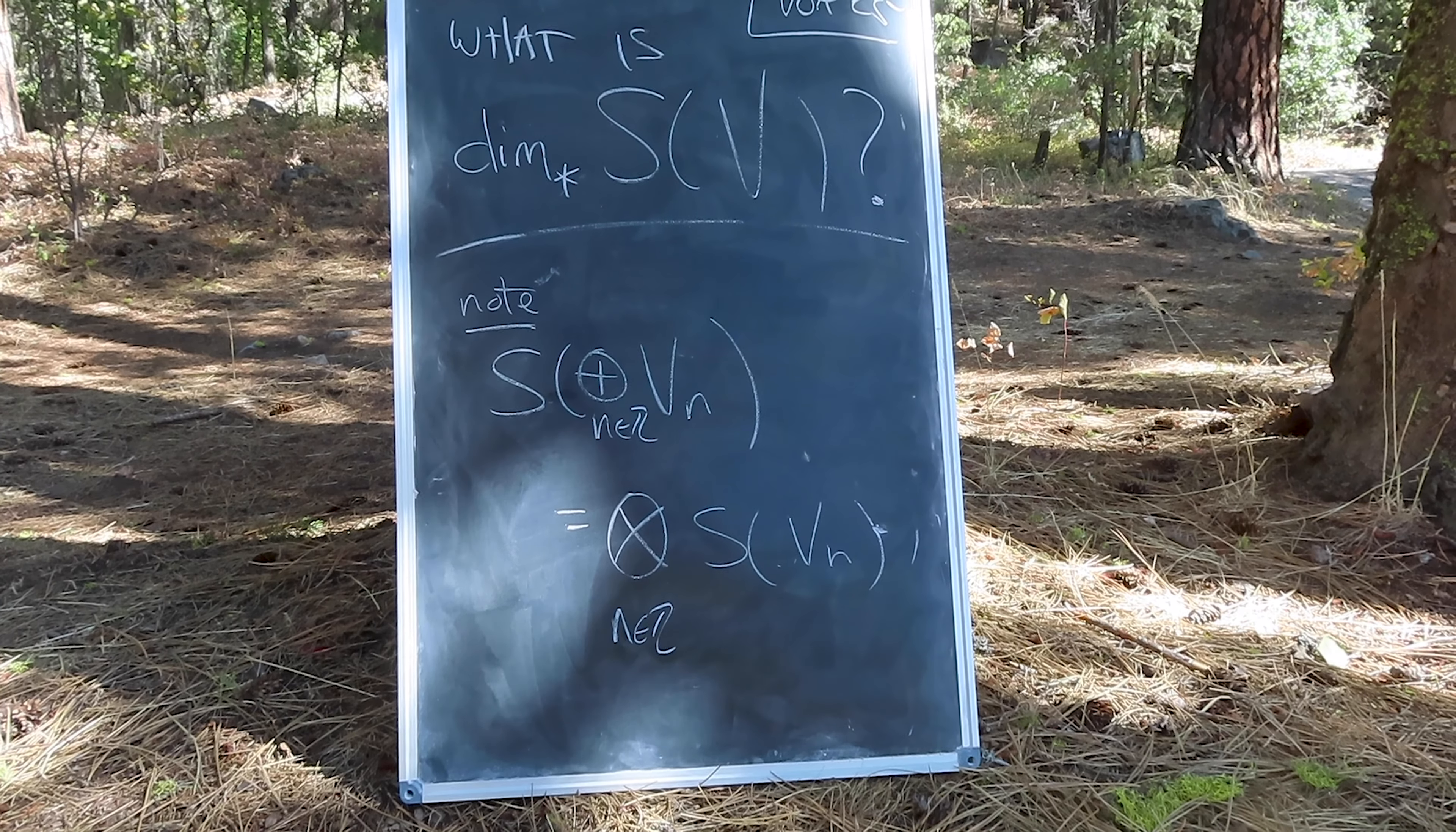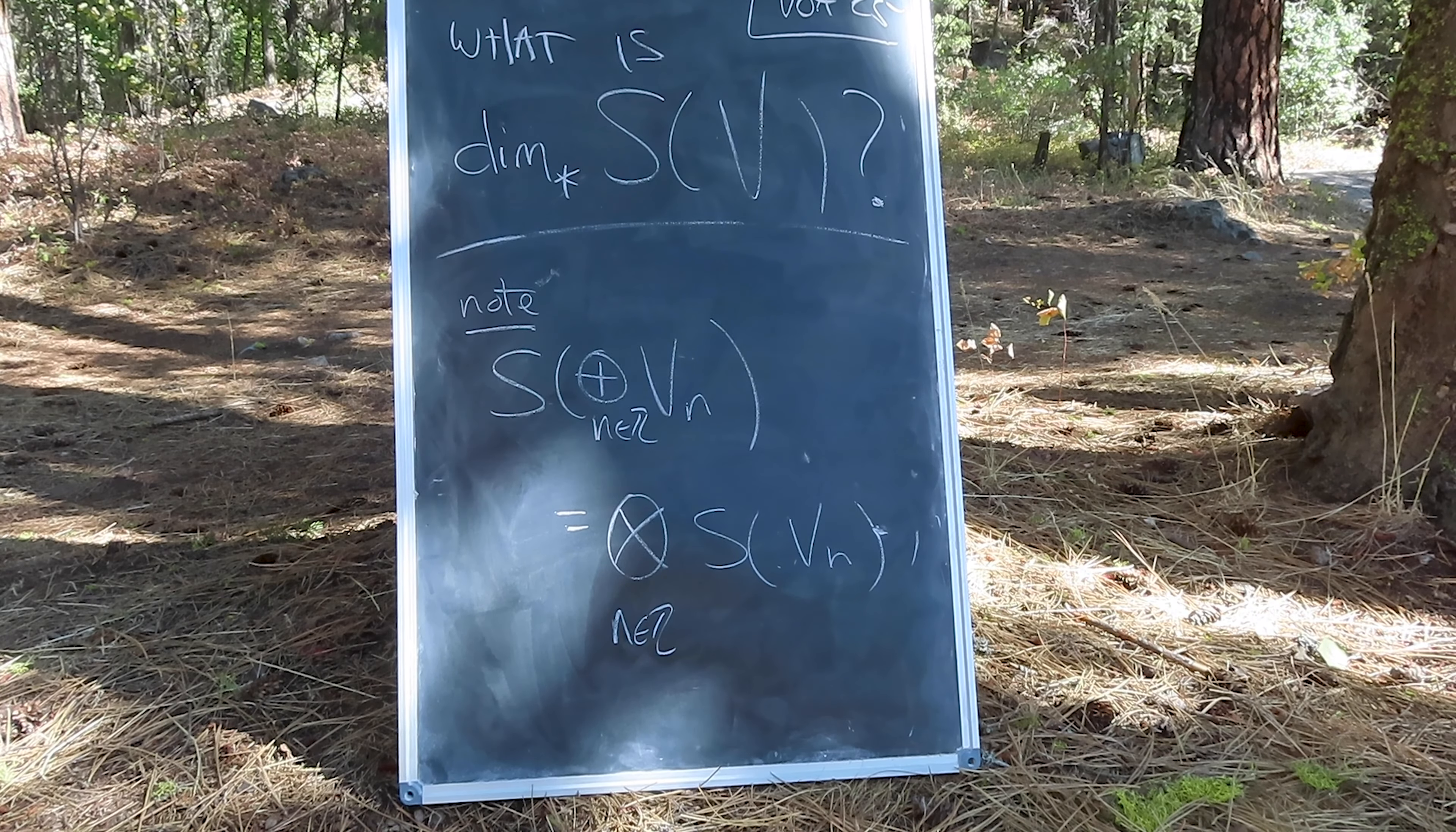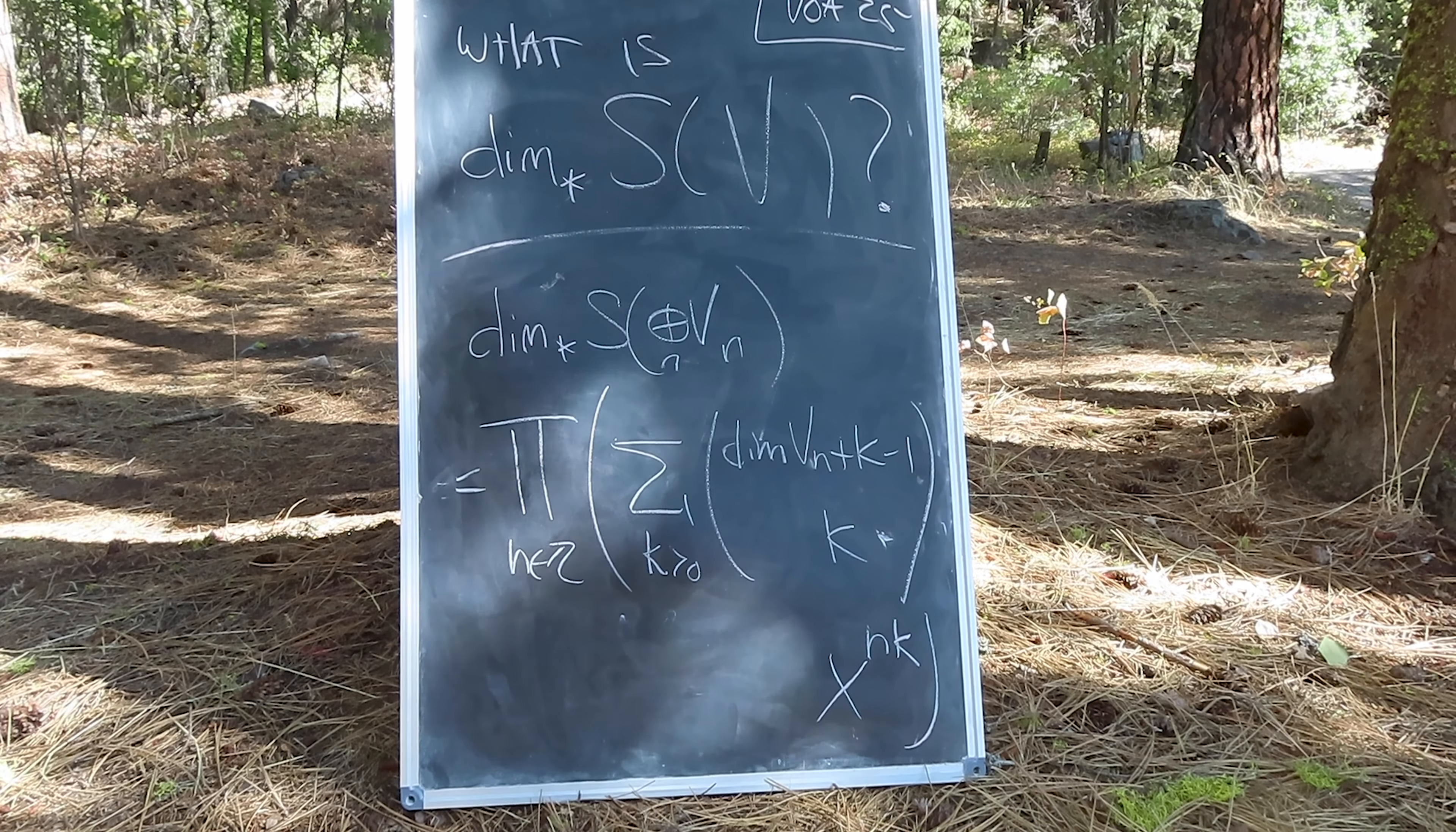Of course, the million dollar question is, what is the graded dimension of the symmetric algebra over V, which was used in a lot of the modules that we've studied so far? To that end, we first observe that the symmetric algebra of a Z-graded vector space amounts to the symmetric tensor product over the symmetric algebra over the spaces of fixed homogeneous dimensions.